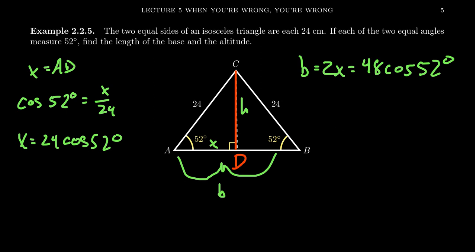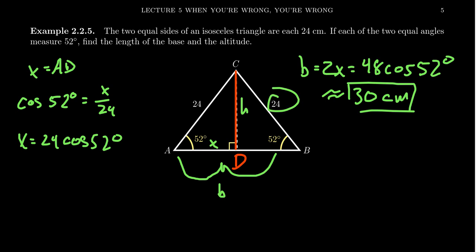Consulting our calculator, we compute cosine of 52 degrees and multiply by 48 to get that the base of the triangle is approximately 30 centimeters. Since the original side length was given to the nearest centimeter, I'll round my answers to the nearest centimeter as well. So the base is 30 centimeters.